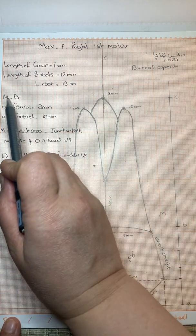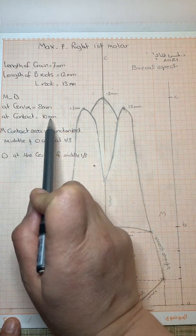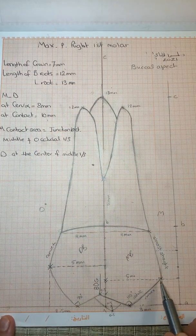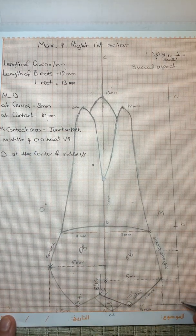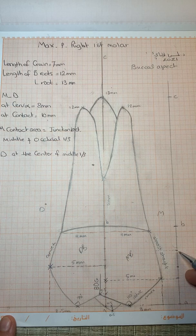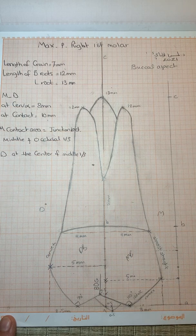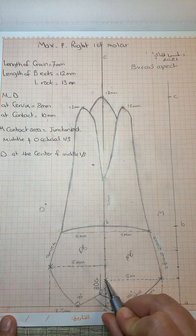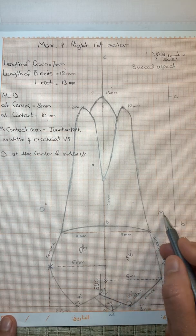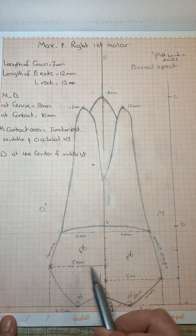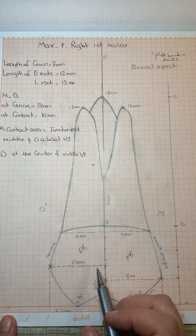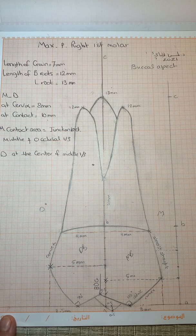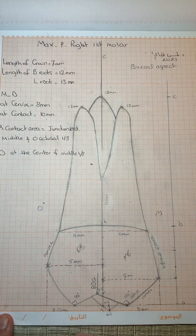The mesio-distal dimension at the contact area is 10 millimeters. The contact area is located at the junction between the occlusal and middle third, approximately 2.3 millimeters. It will be five millimeters toward the mesial surface and five millimeters toward the distal surface. The contact area is located at the center of the middle third, or center of the crown, 3.5 millimeters from A.